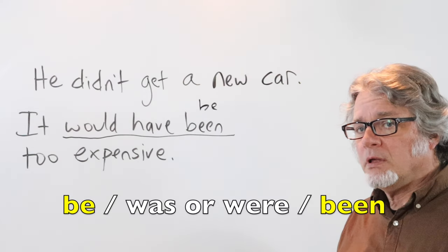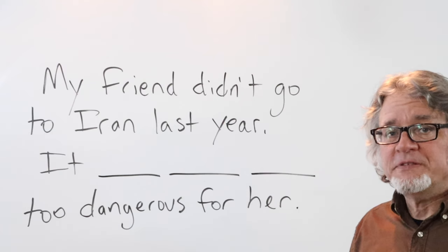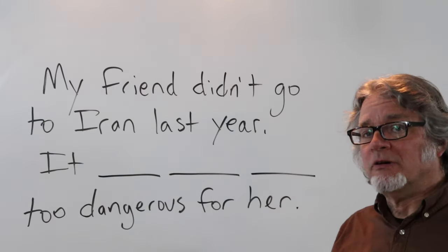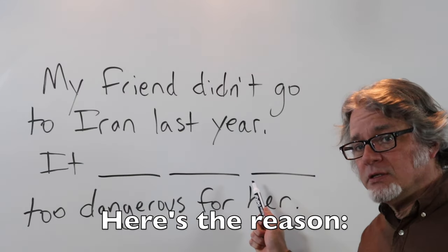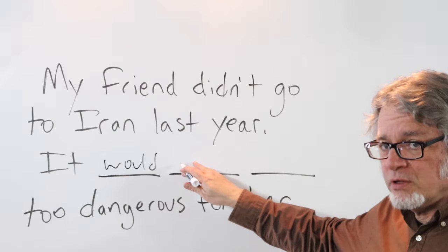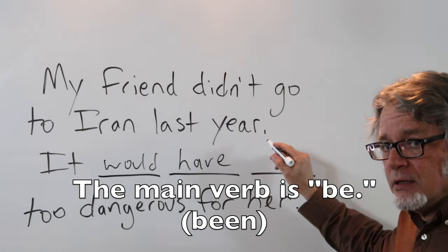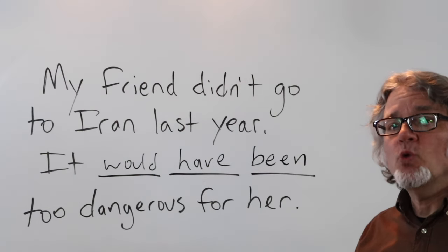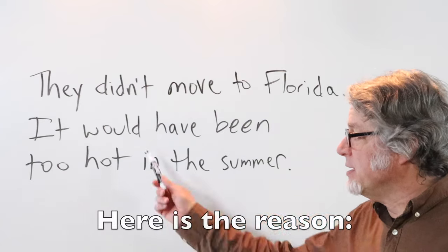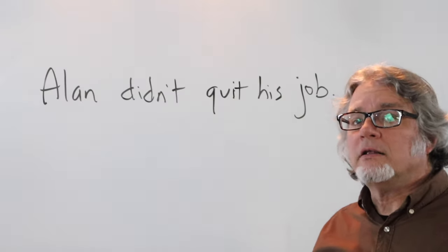The verb 'be' is often used after 'would have.' I know someone who once lived in Iran and she wanted to go back, but my friend didn't go to Iran last year. Here's the reason: it would have been too dangerous for her. They didn't move to Florida, and here is the reason: it would have been too hot in the summer.